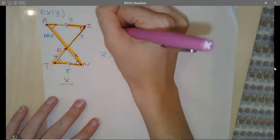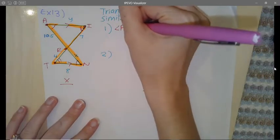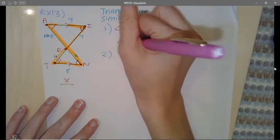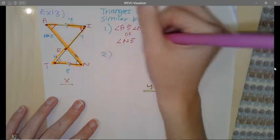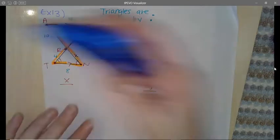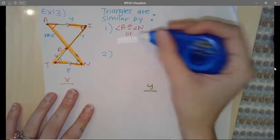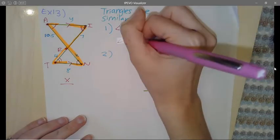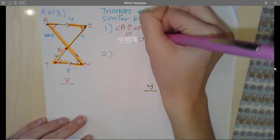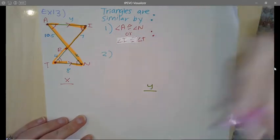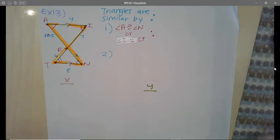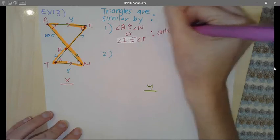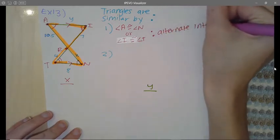I'm going to group those together, so I'm going to say angle A is congruent to angle N. Angle I is congruent to angle T, and both of those—the reason why is because they're alternate interior angles. If you remember, the Z shape are the alternate interior angles, so by the alternate interior angle theorem, those two angles are congruent.